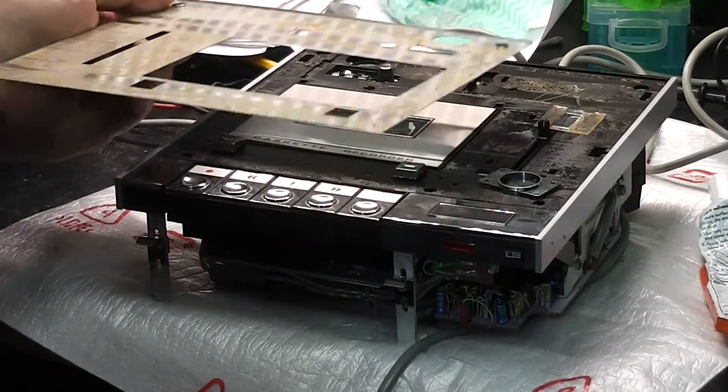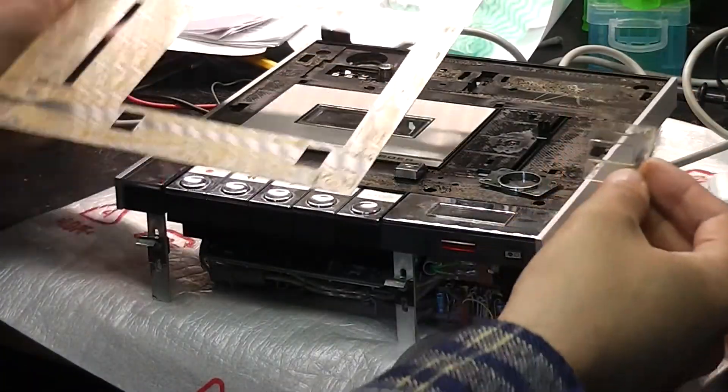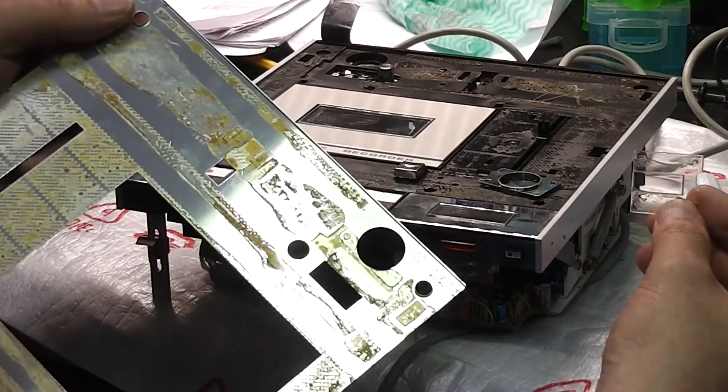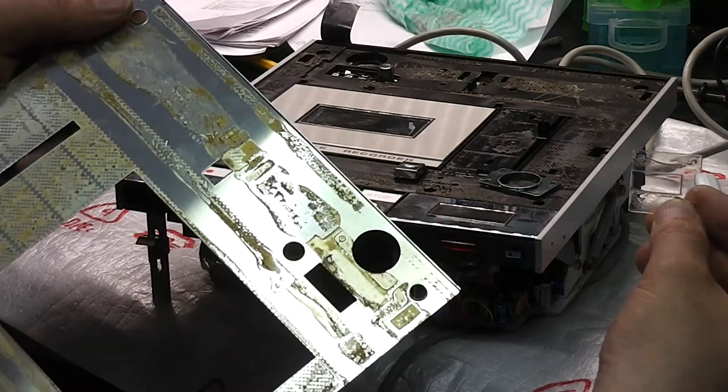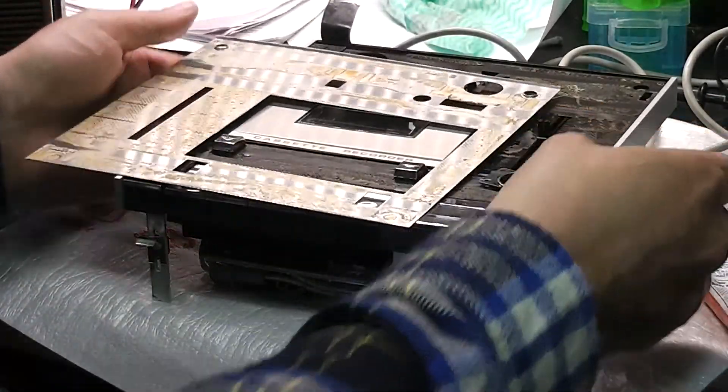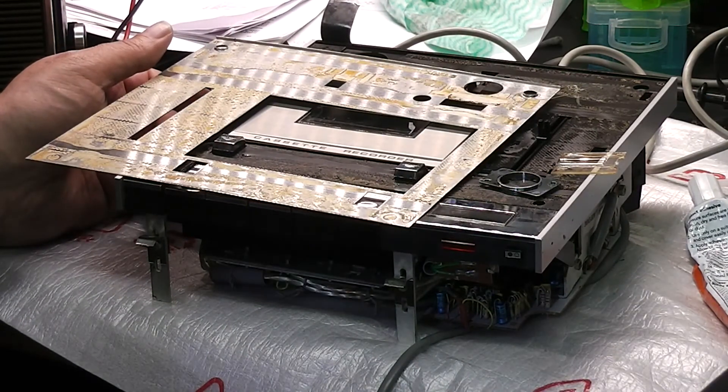Well, it's time to start gluing things back together now, I think. Fortunately, it's pretty obvious where things go, because you can see where the old glue was. So I'll get the rubber cement out and have a go with that.